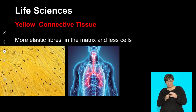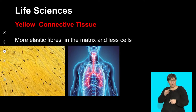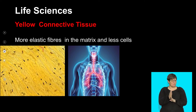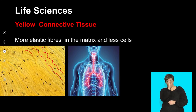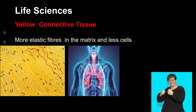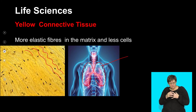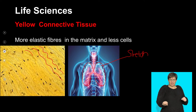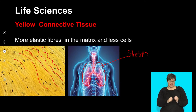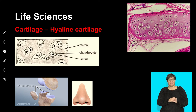Yellow elastic connective tissue has wavy elastic fibers that can expand and stretch. Look where I've placed it — in the lungs, because my lungs need to inhale and exhale, meaning they need to stretch and then return. There are lots of fibers in this tissue and less matrix, and the cells are called fibroblasts.